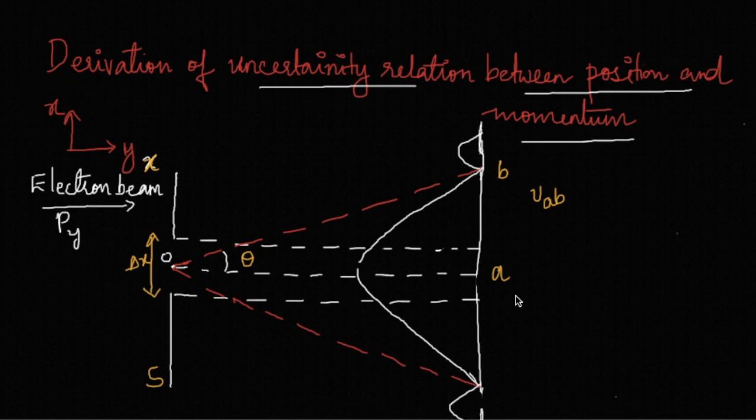Now we are trying to measure the position x as well as the velocity component in the vertical direction. That is, we are going to find out about x as well as delta vx, the position as well as velocity in the x direction.